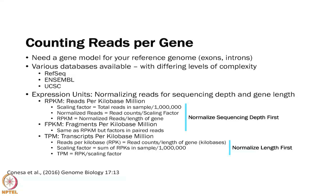You need a gene model — a database that says where your exons are and where your start sites are. There are lots of databases available with differing levels of complexity. For example, RefSeq and Ensembl are databases that have files describing what we expect to see at the transcript level. You can use those to measure how many reads you have of different transcripts or genes based on how those genes are structured in the genome.